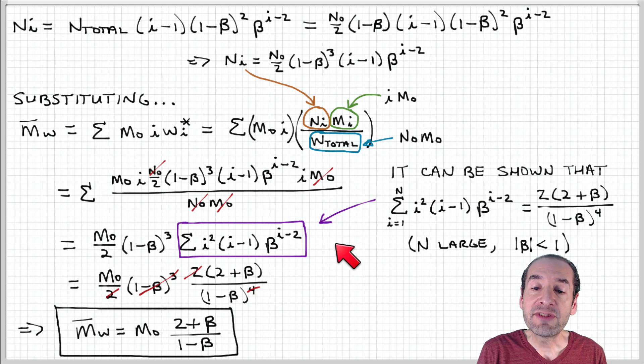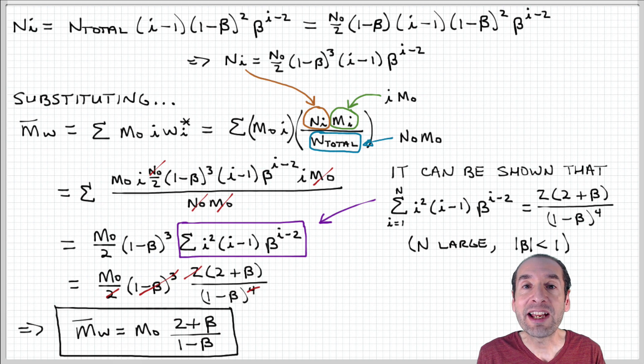So with this final substitution, we can obtain an expression for the weight average molecular weight M naught times 2 plus beta over 1 minus beta.